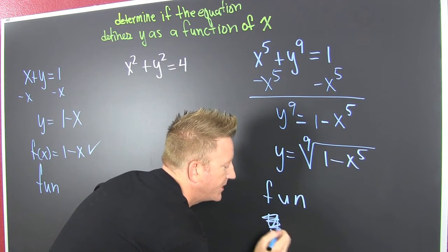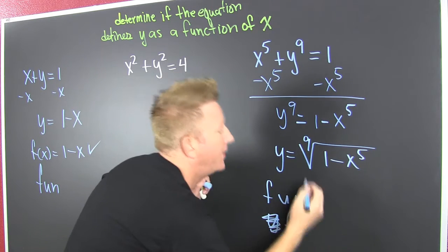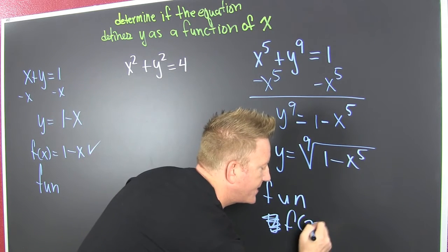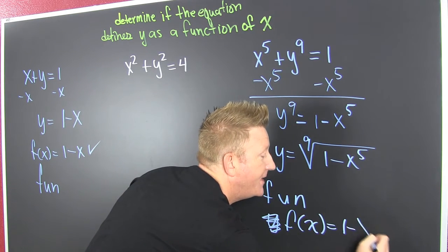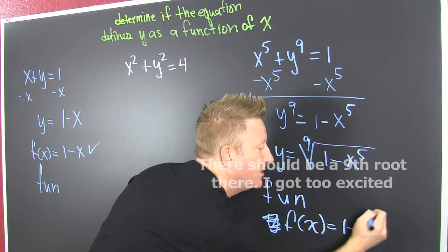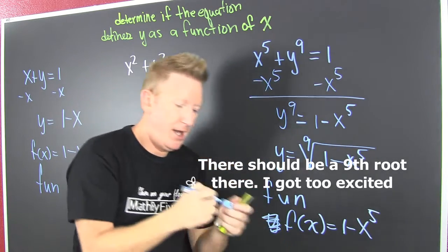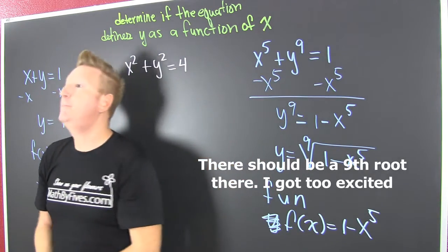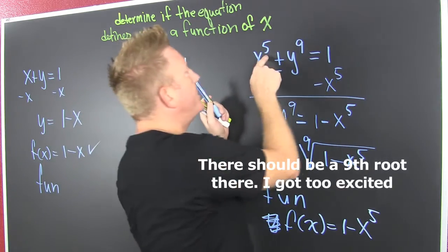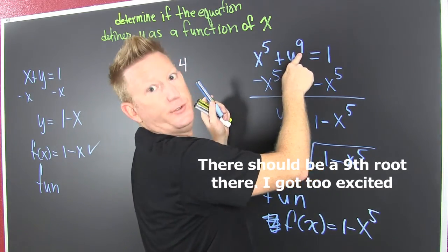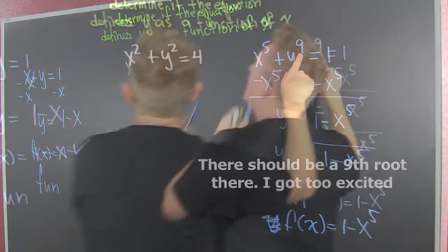Now let's call it f(x) = 1 minus x to the fifth. Boom! That's because that was an odd root — it was an odd index.